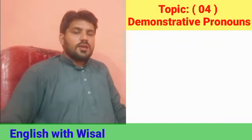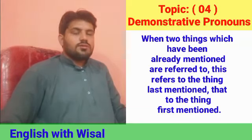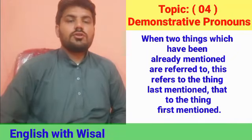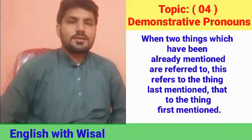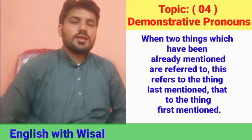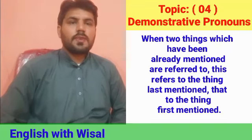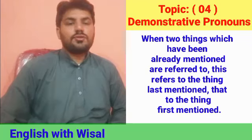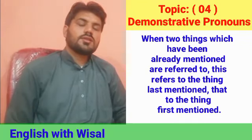When two things which have been already mentioned are referred to, 'this' refers to the thing last mentioned, and 'that' refers to the thing first mentioned. The plural forms follow the same rule, with 'these' and 'those' referring to two or more things.